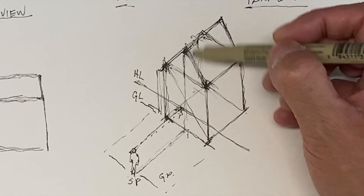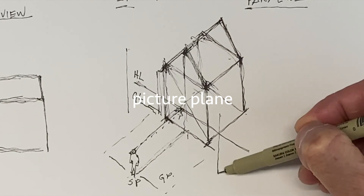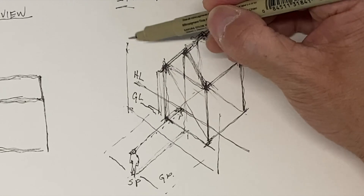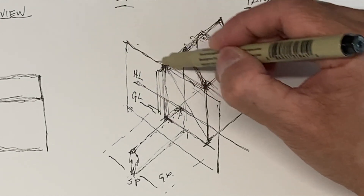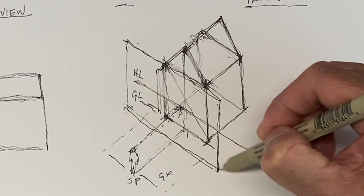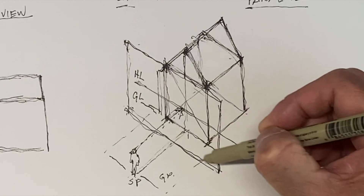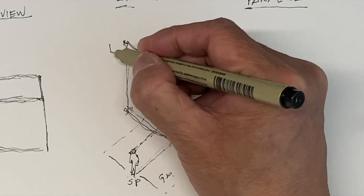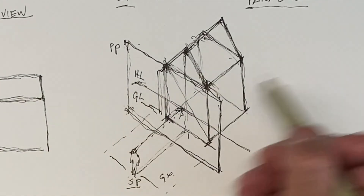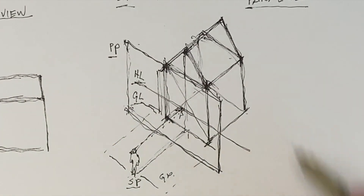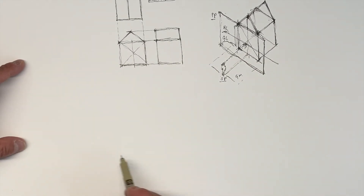Another way to look at one-point perspective is the picture plane. The picture plane is perpendicular to you, and this structure will be projected onto this picture plane. So we have: station point, horizon line, ground line, and the picture plane. With that in mind, we can start to illustrate this image in one-point perspective.